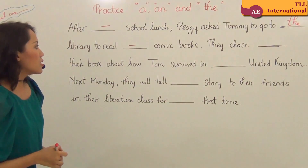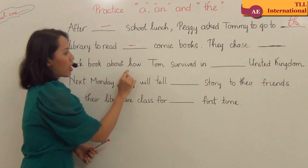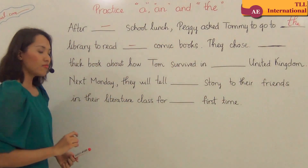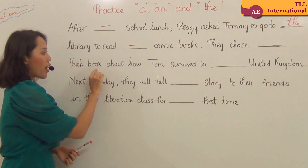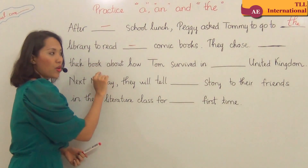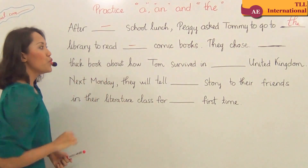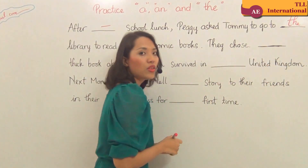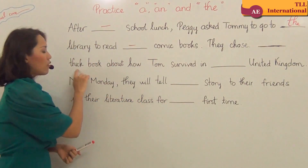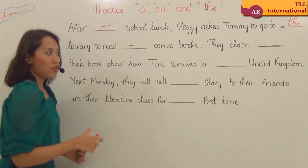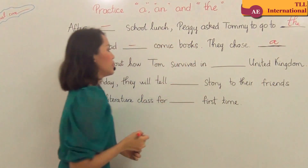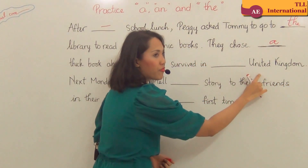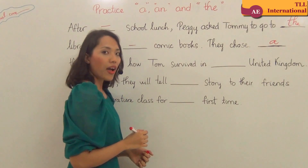Next sentence: 'They chose a book about how Tom survived in the United Kingdom.' How many books did they choose? Only one. Do we know which book? No — when we mention something for the first time, we use the indefinite article. 'Book' begins with a consonant sound, so we use 'a'. And for 'United Kingdom', since Britain is made up of several islands, we use 'the United Kingdom'.